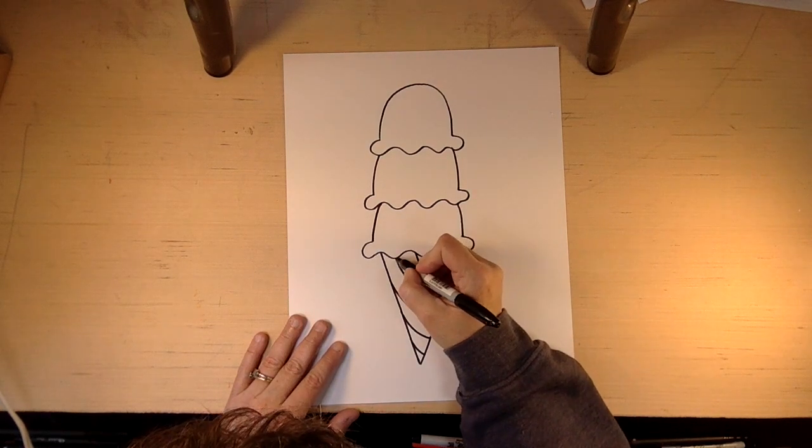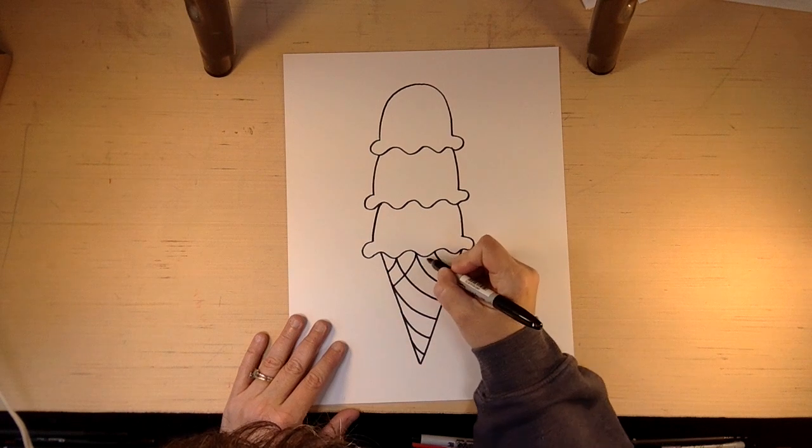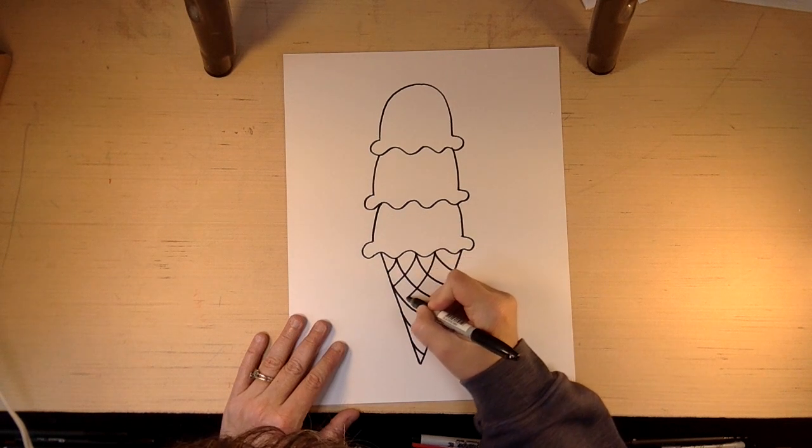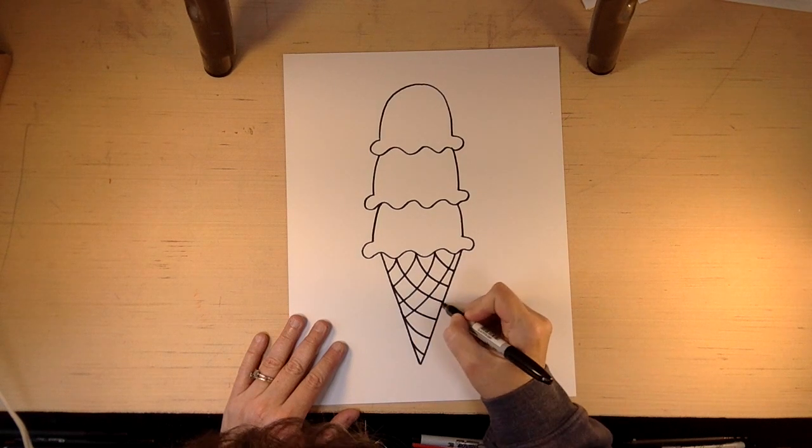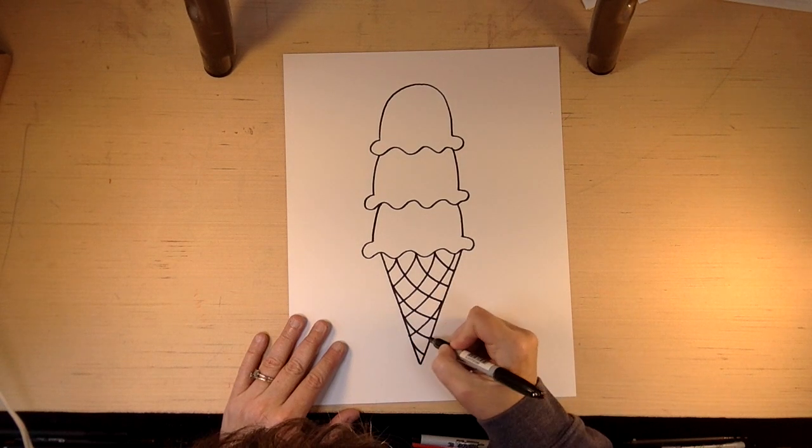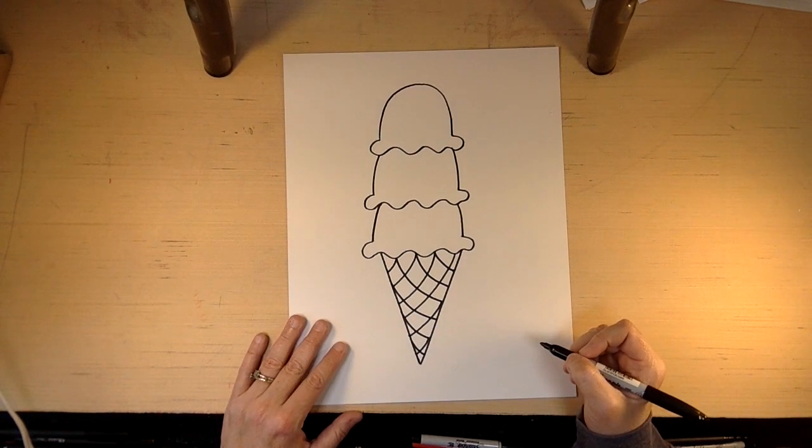So we're going to come across here, and we're going to do the same on the other side. Curve, and then curve, and then curve, and then curve. It looks pretty yummy, doesn't it? Okay, so that's our cone.